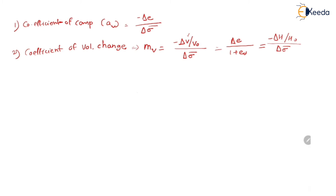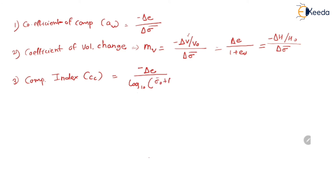So MV becomes equal to delta H divided by H0, divided by delta sigma bar. The next formula is the compression index, denoted as CC. It is the slope of the curve E versus log sigma bar. CC equals minus delta E divided by log base 10 of (sigma 0 bar plus delta sigma bar) divided by sigma 0 bar.